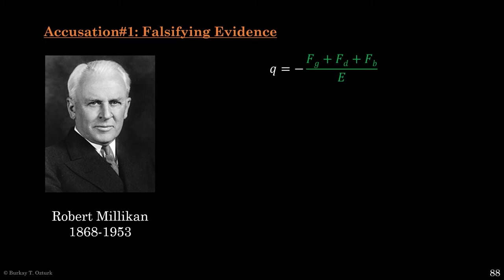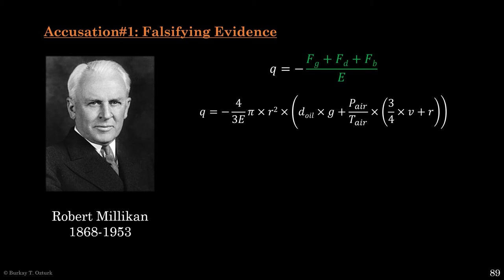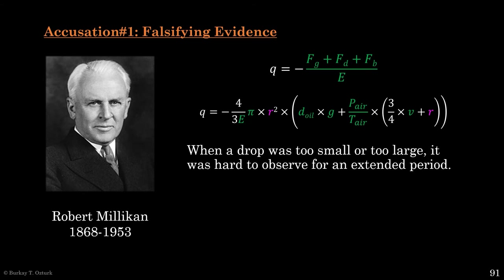Remember how Millikan got to Q. He knew everything on the right side of the equation and used it to compute Q. But the reality isn't as simple. Take r, for instance — the radius of a drop. When a drop is too small or too large, it doesn't allow reliable measurements. Small drops are affected too much by air molecules bumping into them, so they bounce around instead of falling down nice and steady. Large drops are too heavy and fall too fast. Millikan's notes include comments about several drops complaining about them being too small or too large. So it isn't unreasonable to guess that Millikan discarded these measurements as unreliable.